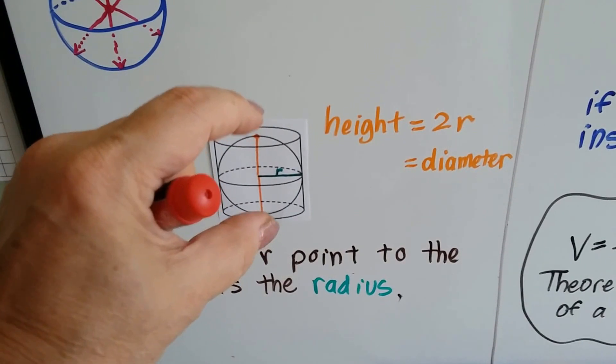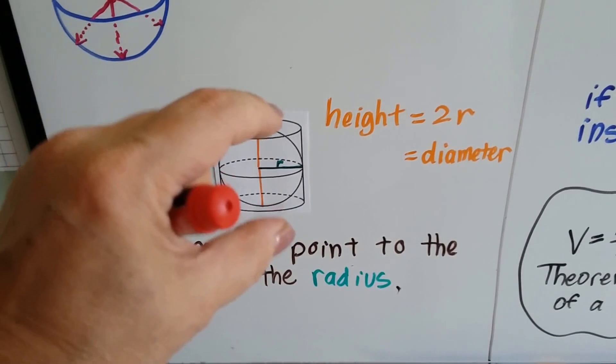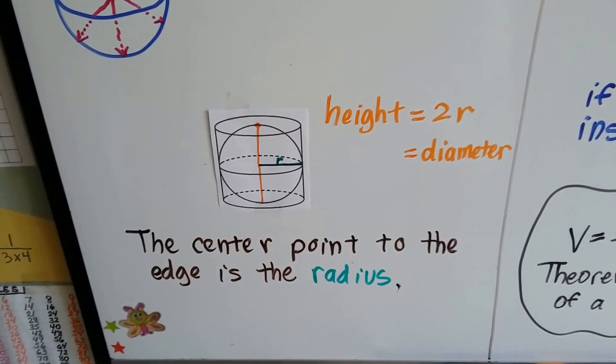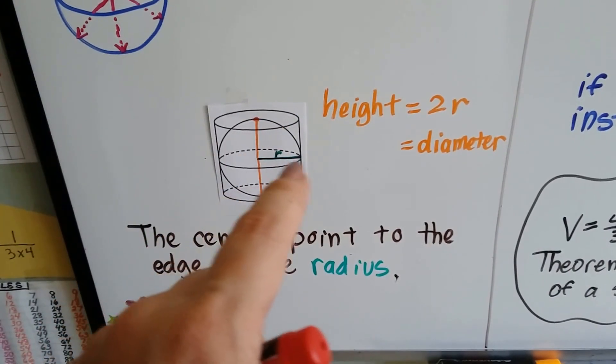So two of the radii would be equal to the height of the cylinder if they had the same height and same diameter. And the center point to the edge is the radius, and we can see it for the cylinder and for the sphere.